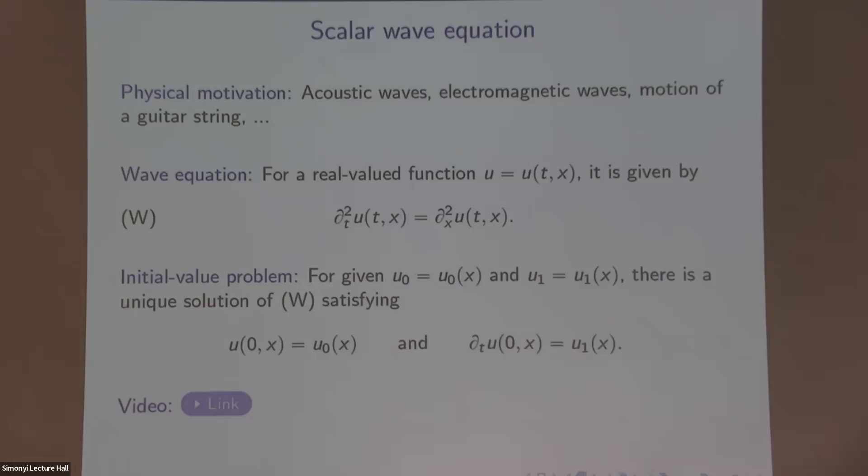But what is true is that the corresponding initial value problem has a unique solution. Let's assume that we're given a function u0 that only depends on x and a function u1 that also only depends on x. Then there's a unique solution to this wave equation that has initial position u0 and initial velocity u1. What this means is that the function at time 0 in position x should be u0(x) and the time derivative at time 0 in position x should be u1(x). So that's unique. It's uniquely specified by these kind of conditions.